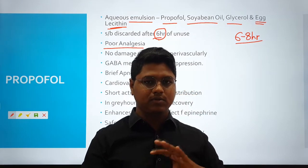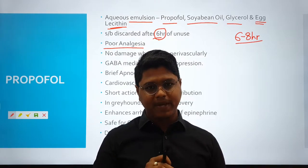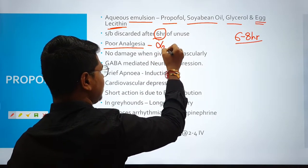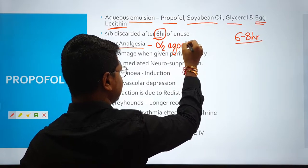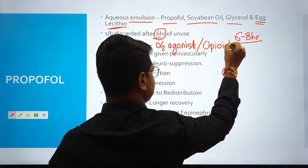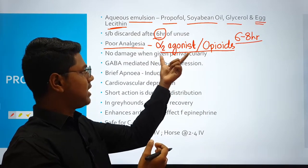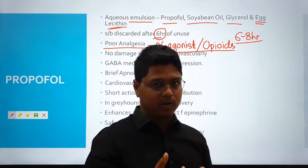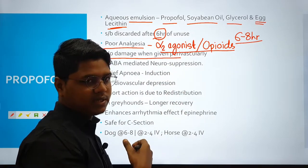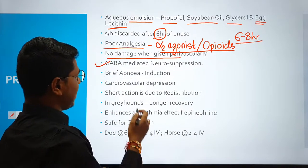Even if you have induced with propofol and have not given any analgesic, when performing a painful operation the animal will wake up fast. Usually it is combined with alpha-2 agonists like xylazine or dexmedetomidine, and also opiates, which are very strong analgesics. Animals are usually pre-sedated with alpha-2 agonists or opiates, then induced with propofol. Unlike barbiturates, propofol does not produce tissue damage when administered perivascularly. Its mechanism of action is GABA-mediated neural suppression.